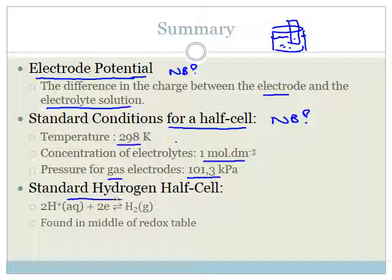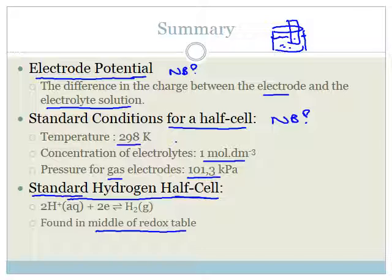Finally, your standard hydrogen half cell, against which everything is compared, is: 2H⁺(aq) + 2e⁻ → H₂(g). It's found in the middle of the redox table because everything on the redox table is compared to it. Please make sure you understand the standard hydrogen half cell and how it works, and go and do the questions and assessments. Examiners like giving questions where they swap out hydrogen and use something else like copper or zinc, so make sure you can apply the same principles. Have a great day.